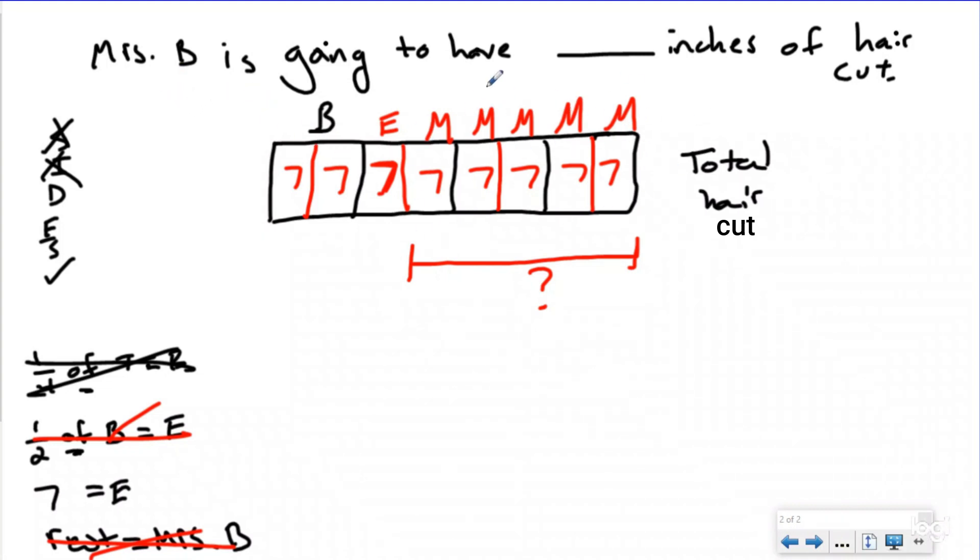I'm looking for how much Mrs. Butler got cut. So if Mr. Butler was 2/8 and Elijah was 1/8, that leaves us with 5/8 left for Mrs. Butler. And if each of those 8 is worth 7: 7, 14, 21, 28, 35. Mrs. B is going to have 35 inches of hair cut. That was our develop our plan, we did our equation and we solved it.